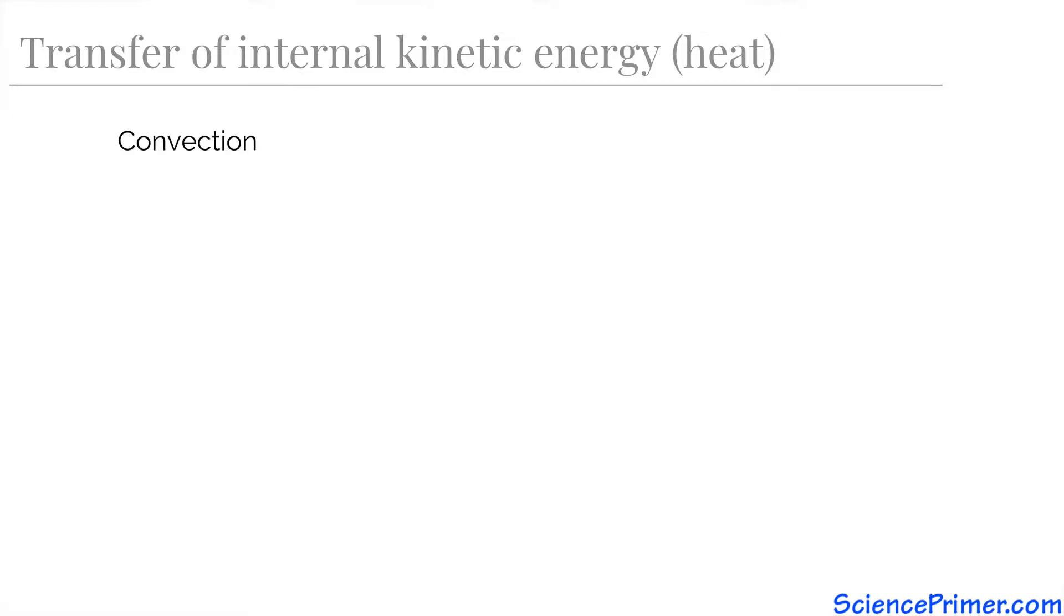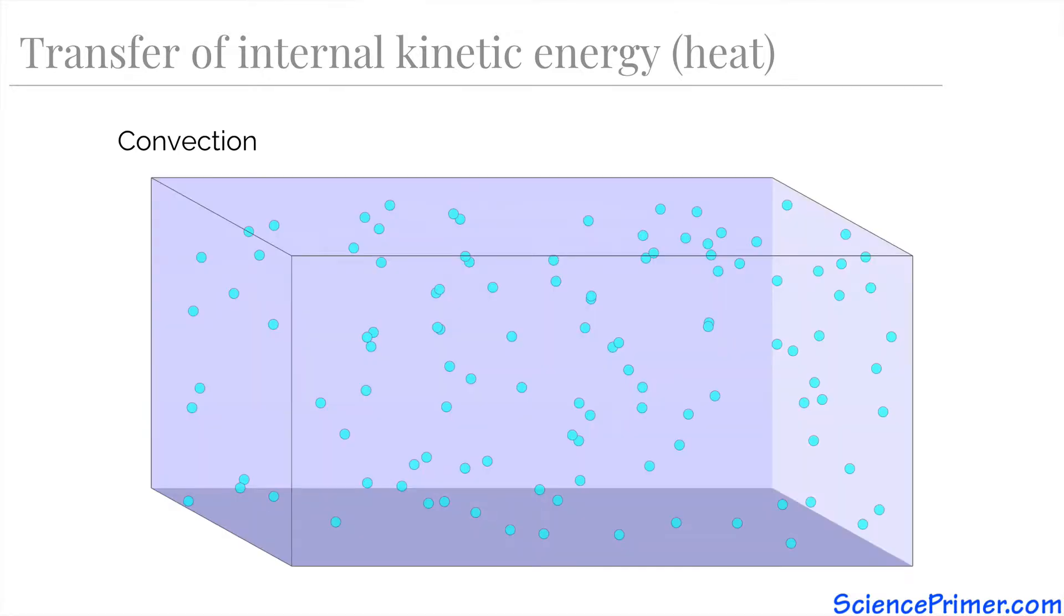The next way heat can flow is called convection. Convection requires atoms to be able to move relative to each other, making this the form of heat flow that dominates in liquids and gases. Rather than the transfer of energy from molecule to molecule, convection is caused by the actual movement of individual molecules relative to each other.